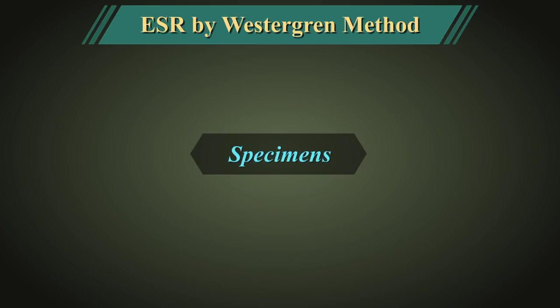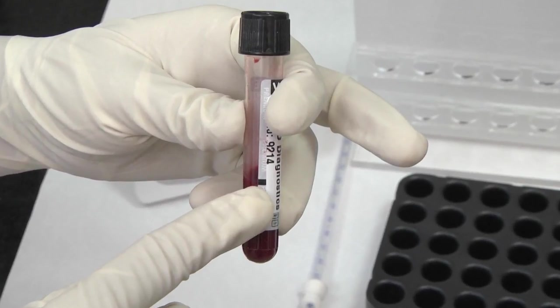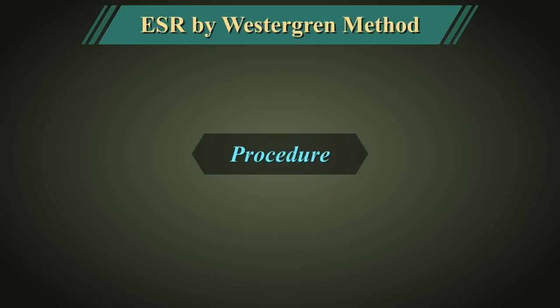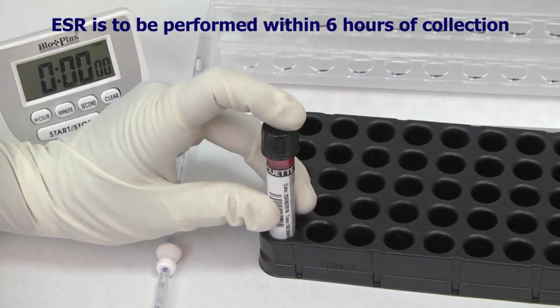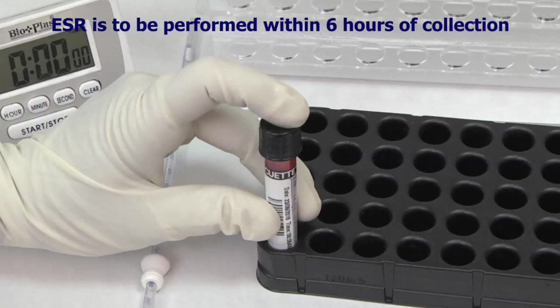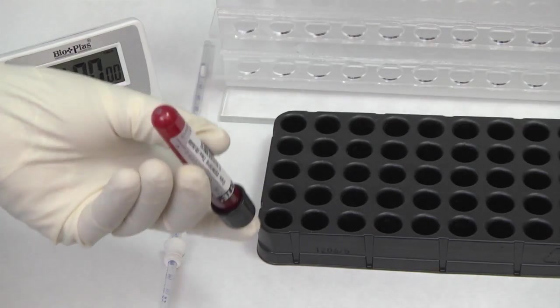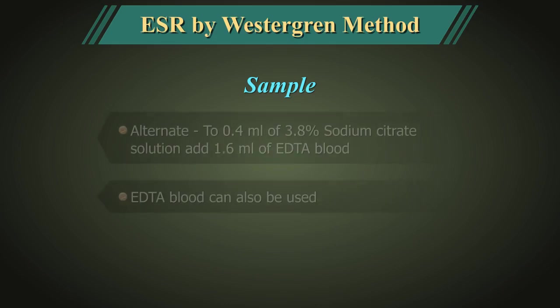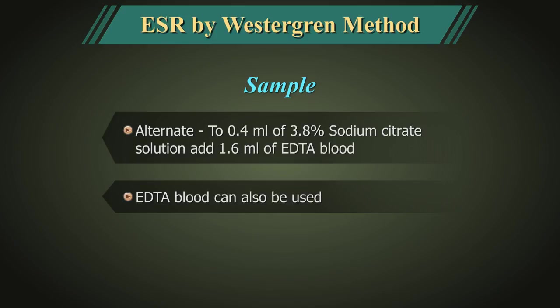Specimens: Collect the sample within 6 hours of performing the test. Standard precautions should be followed. Collect 1.6 ml of blood by venipuncture in a 3.8% sodium citrate vacutainer and mix the contents thoroughly by inverting the vial at least 6 times. Alternatively, measure exactly 0.4 ml of the 3.8% trisodium citrate solution into a clean and dry tube.